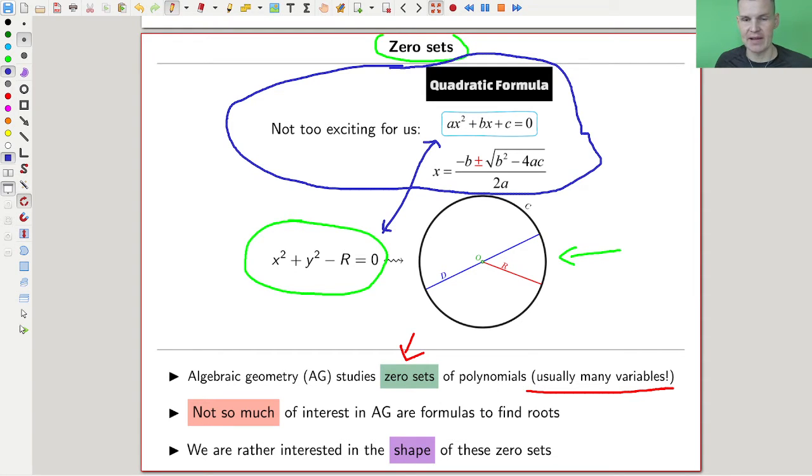The point is finding those formulas is really difficult and essentially impossible from a certain point onwards. We are not interested in finding solution formulas because that's just not happening. We are more interested in describing the shape of the solution. The shape of the solution is a circle, and that's what we are really interested in: the geometry of zero sets of polynomials.